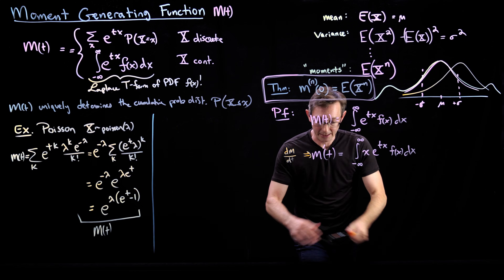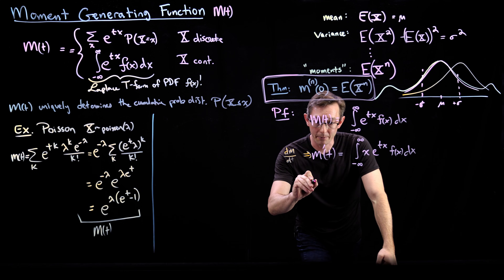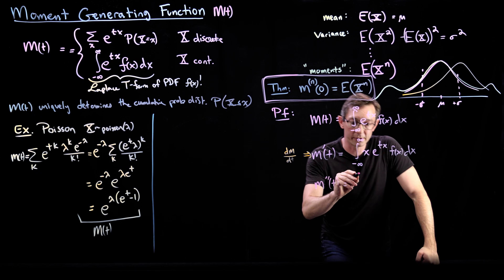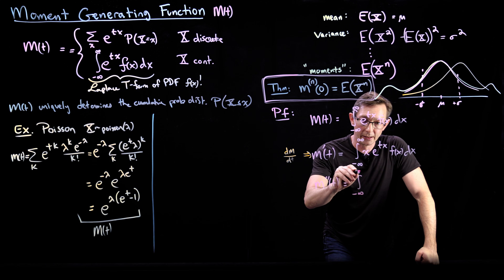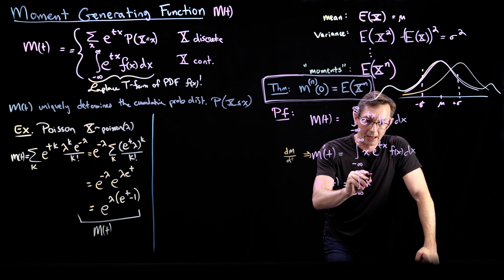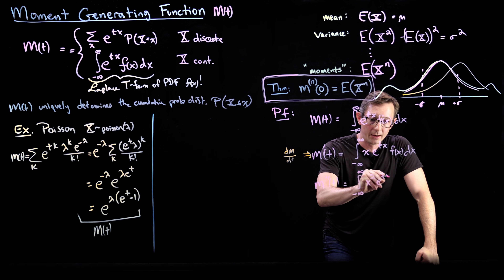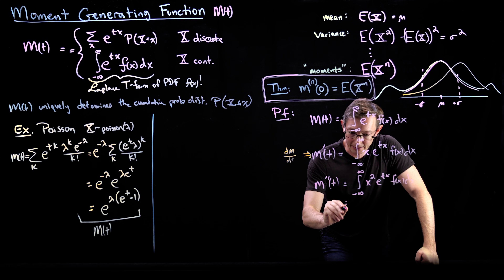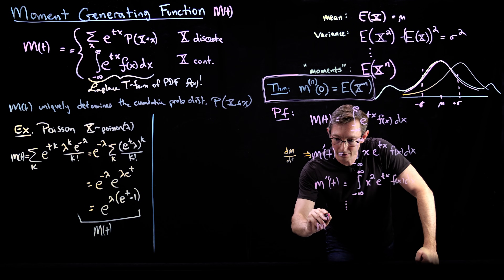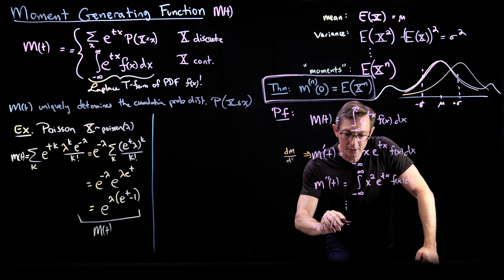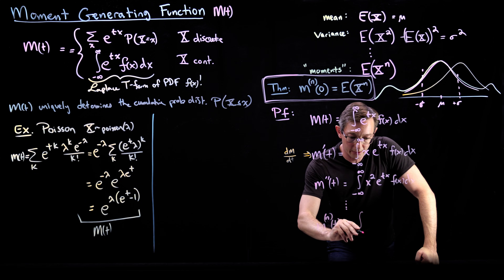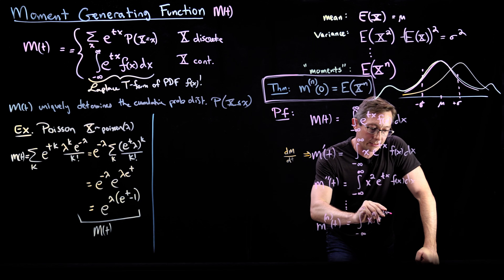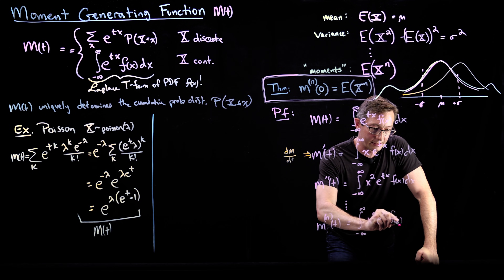Similarly, I can write down the second derivative: m double prime of t equals the integral from minus infinity to infinity of x squared, e to the tx, f of x dx. And so the nth derivative is going to equal the integral from negative infinity to infinity of x to the power n, e to the tx, f of x dx.